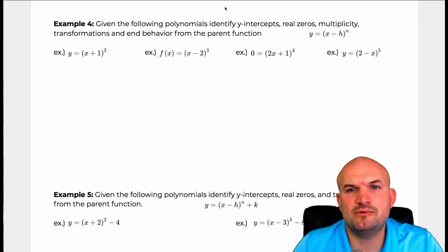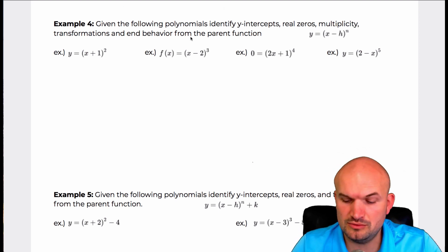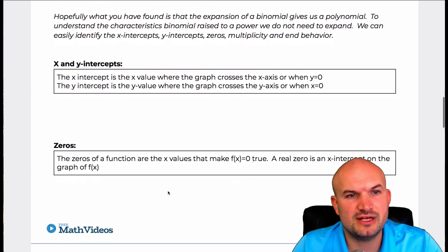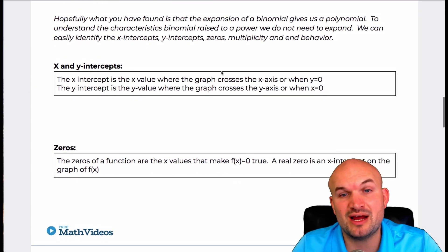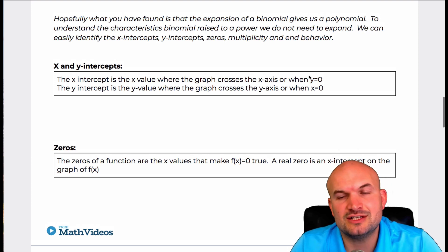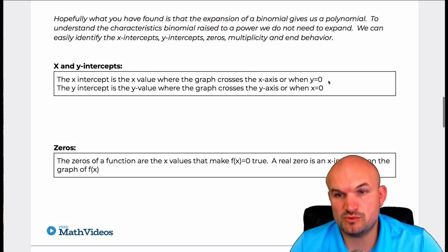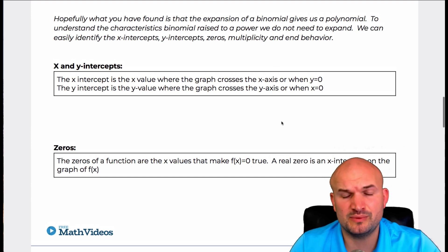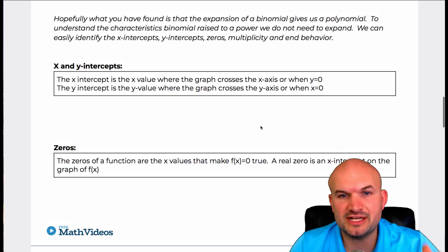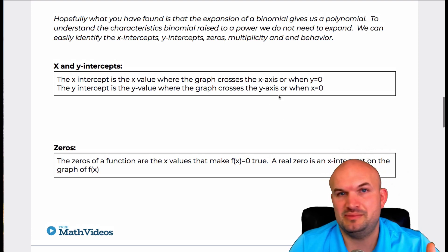Let's go up here and talk about a couple of things — just to remember: the x and y intercepts are when the graph crosses the x or y axis. The x intercept is when y equals zero, and the y intercept is when x equals zero. That's something we discussed before, but I really want to make sure we understand that because for any function, that's going to be the case.